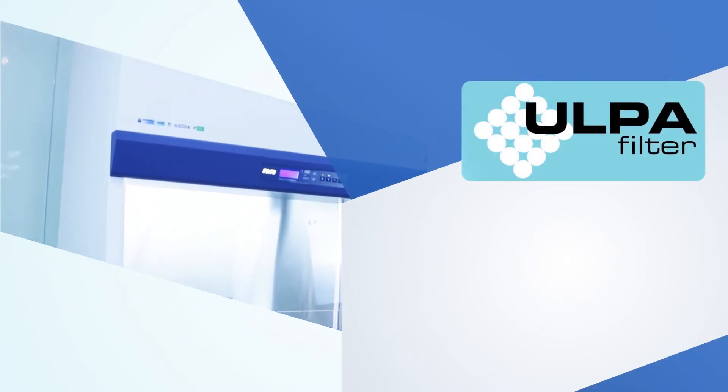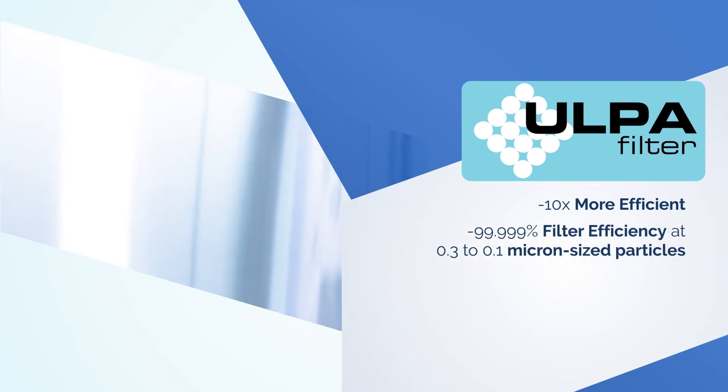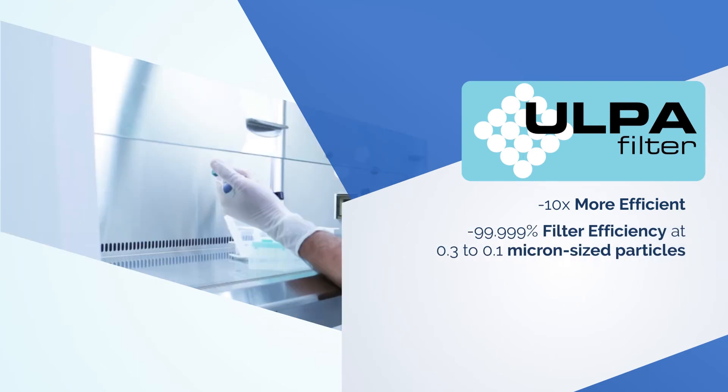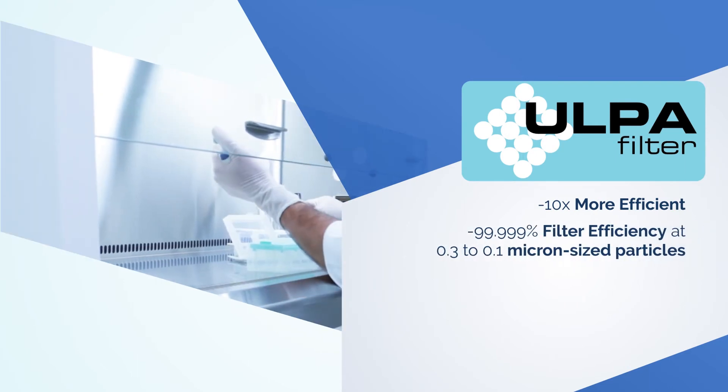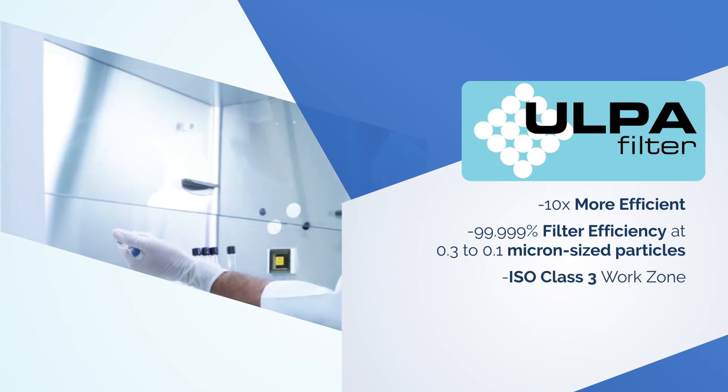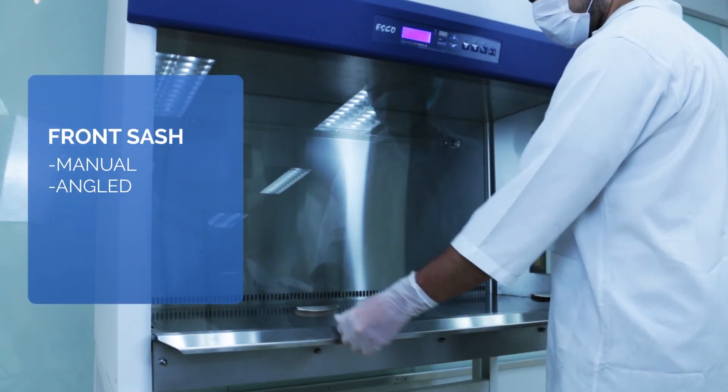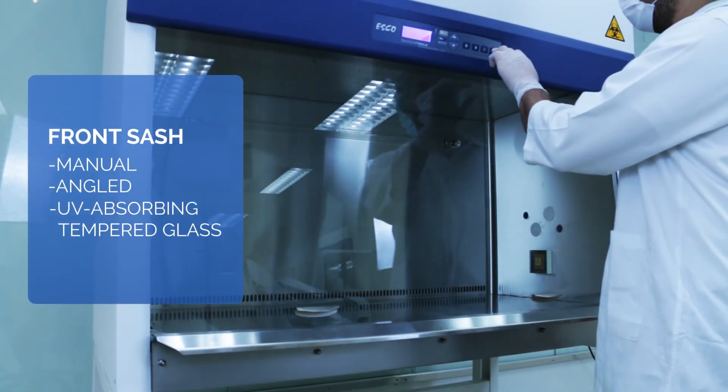Esco Biosafety Cabinet uses ULPA filtration system having 10 times more filter efficiency of 99.999% at 0.3 to 0.1 micron sized particles versus HEPA filter. It's manual angled UV absorbing tempered glass front sash that can be operated even during power failure.